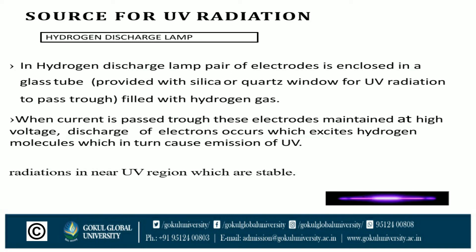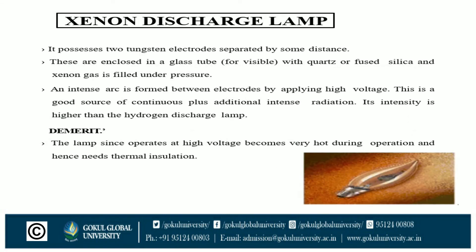It produces radiation in the near UV region which is stable. The xenon discharge lamp possesses two tungsten electrodes separated by some distance. These are enclosed in a glass tube — quartz or fused silica for visible use — and xenon gas is filled under pressure. An intense arc is formed between the electrodes by applying high voltage, making it a good source of continuous, intense radiation.